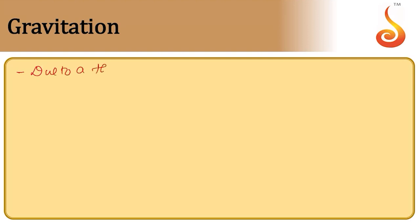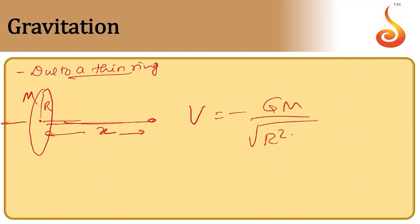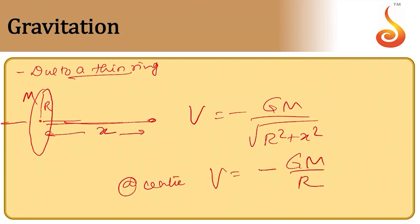For a thin ring of mass M and radius R, the gravitational potential at a point distance x from the center along the axis is V = −GM/√(R² + x²). At the center (x = 0), V = −GM/R, which equals the potential due to a point mass located anywhere on the circumference.